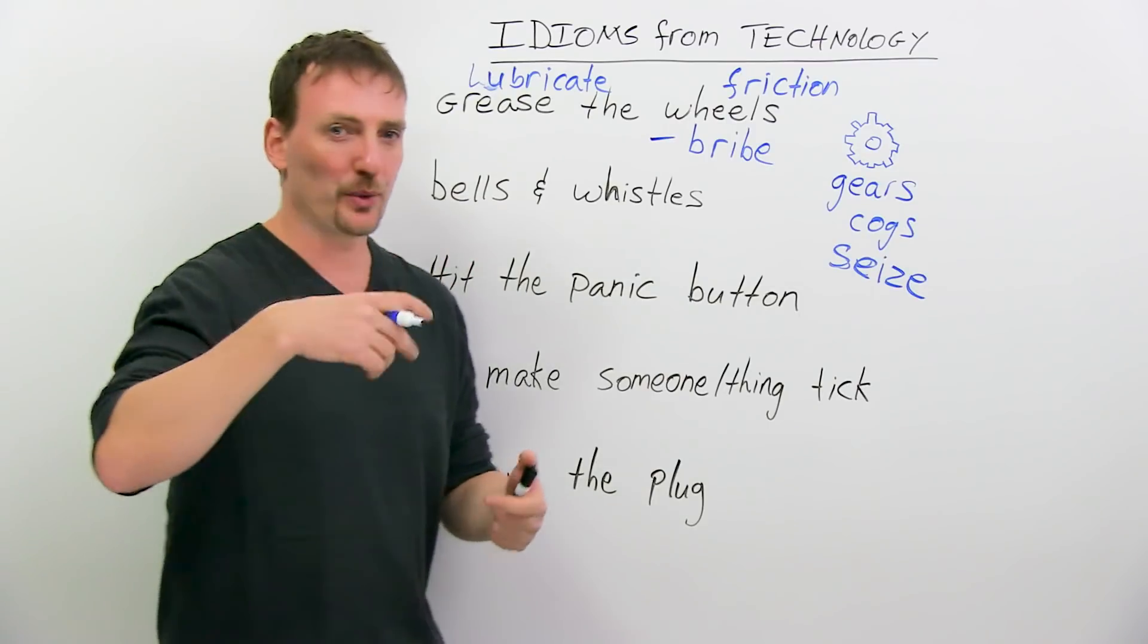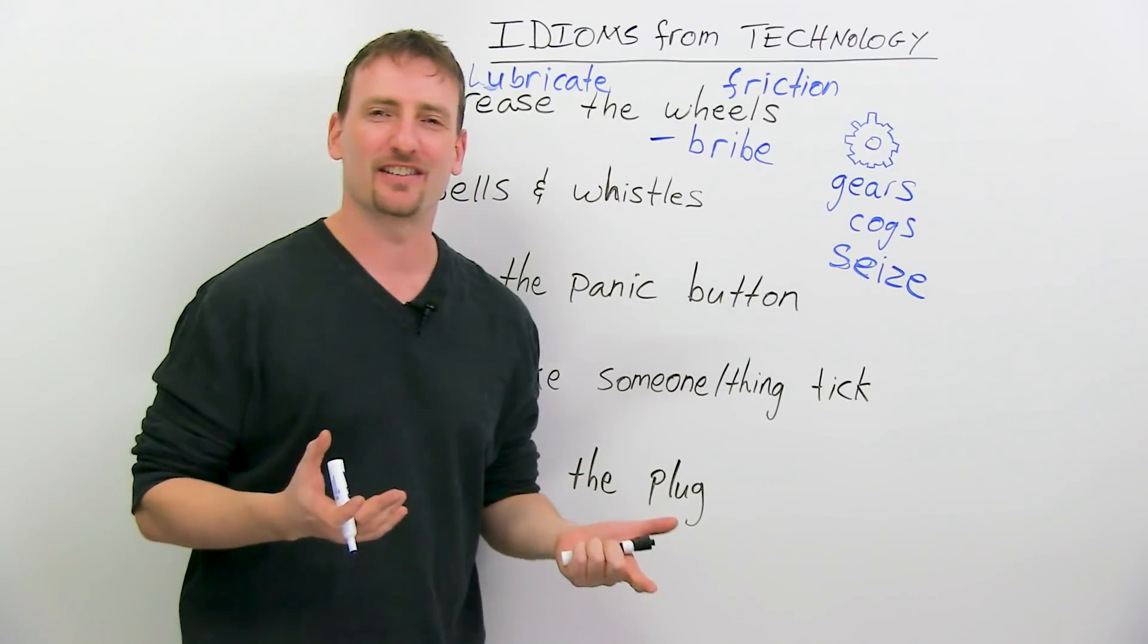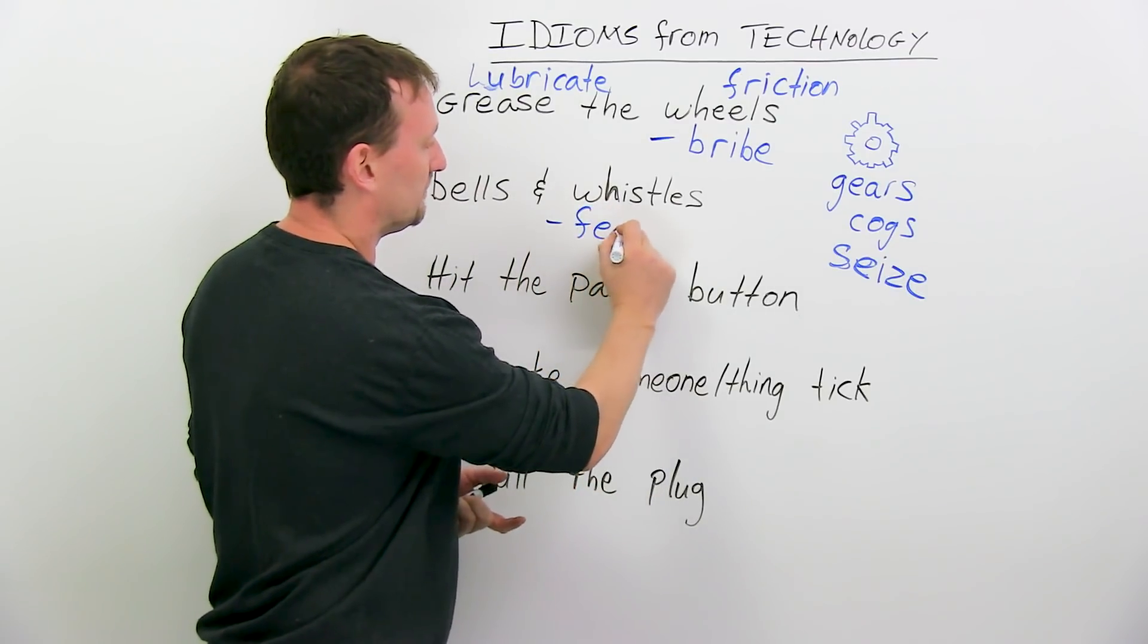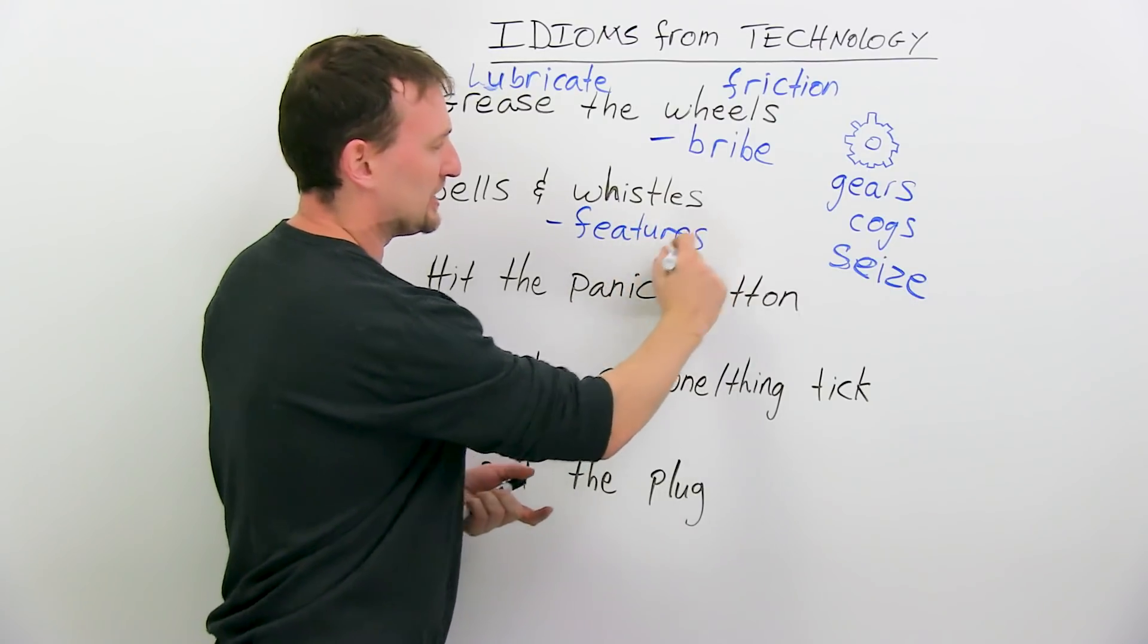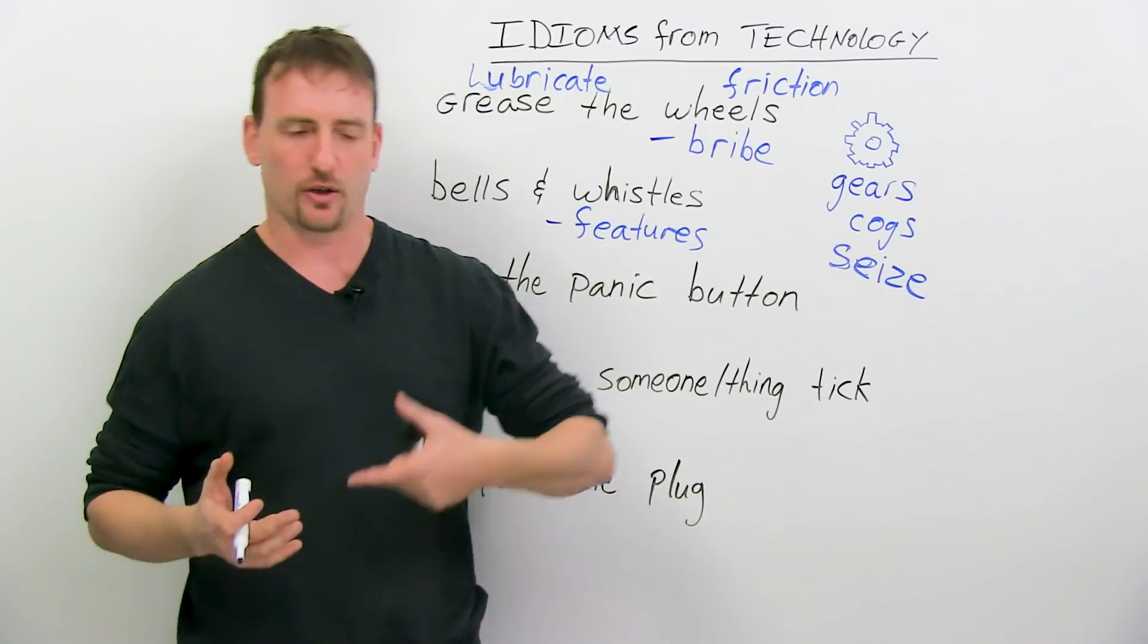Bells and whistles. If you're talking about bells and whistles on something, you're talking about all the features. Especially, you're talking about the cool, the good features. So if you buy a car, you go to the dealership, and you say to the guy, I want this car with all the bells and whistles.